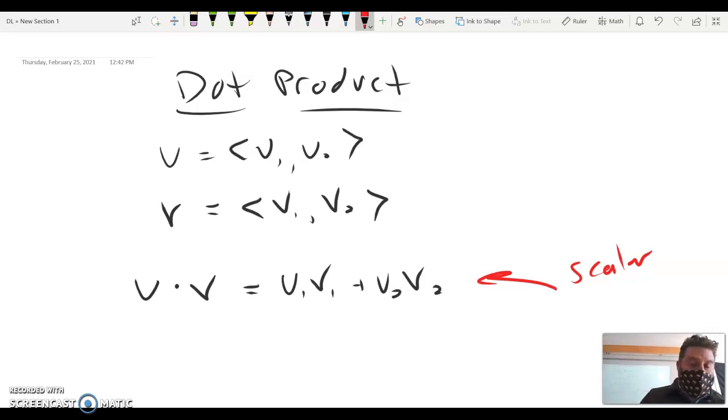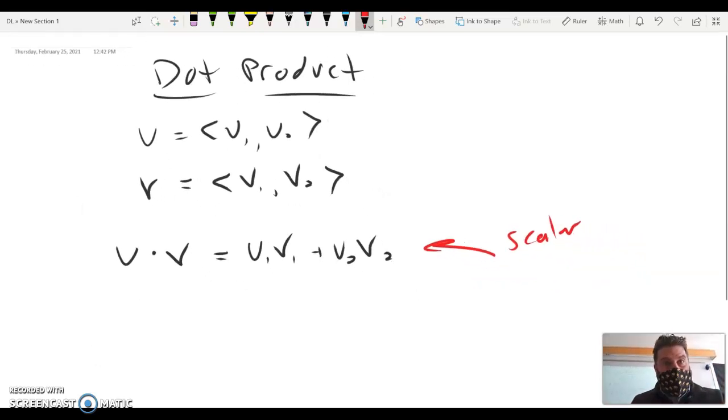The dot product helps us very quickly get the angle between vectors. It also gives us a little shortcut for determining when vectors are indeed orthogonal. In other words, angle between is 90, the dot product equals zero. But we're going to get into a little bit more fun use of a dot product. It's called a projection. But let's just do one practice problem with dot product.